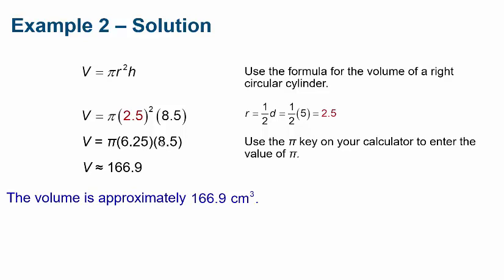Pi times 6.25 times 8.5 gets me a volume of roughly 166.9 when I round to one decimal point. So remember, volume is going to be centimeters squared times another centimeters, so it gets me centimeters cubed here.